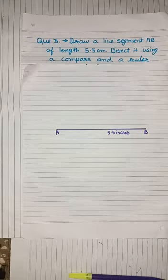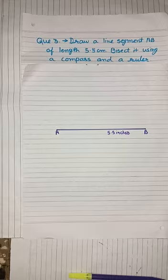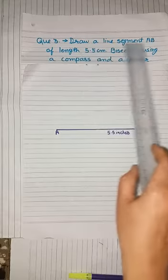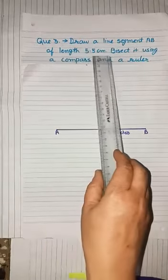Now students, last question of practice set 40, that is question number 3 and last construction of this chapter. The question is: draw a line segment AB of length 5.5 cm.